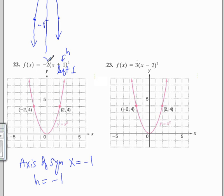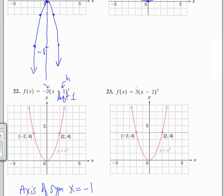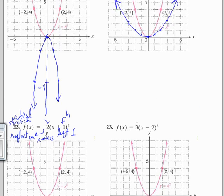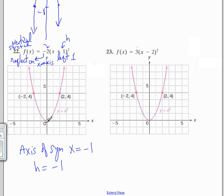And the 2, just like in problem number 20, the absolute value of our a, since it's greater than 1, this is a vertical stretch by a factor of 2. And this is reflected on the x-axis. So this graph, in fact, looks extremely similar to the graph that we had in number 20, except it's moved to the left 1.